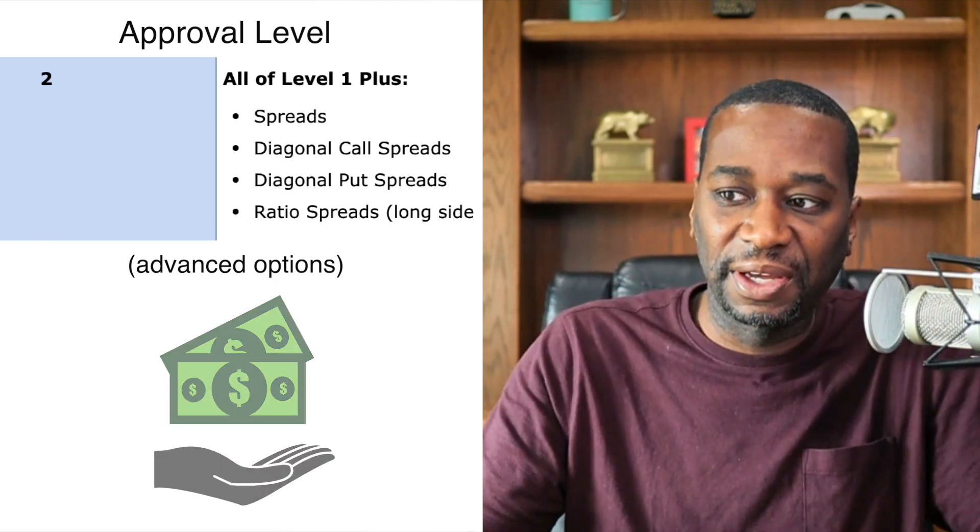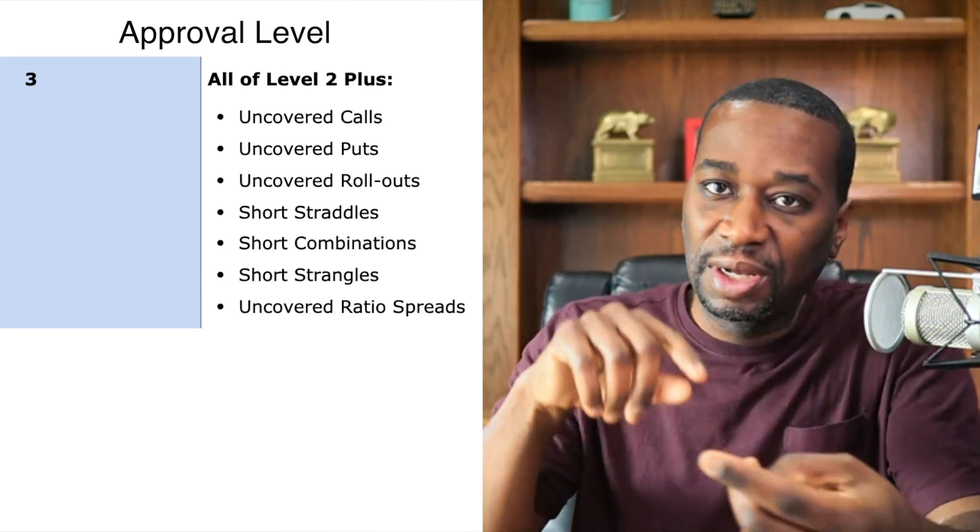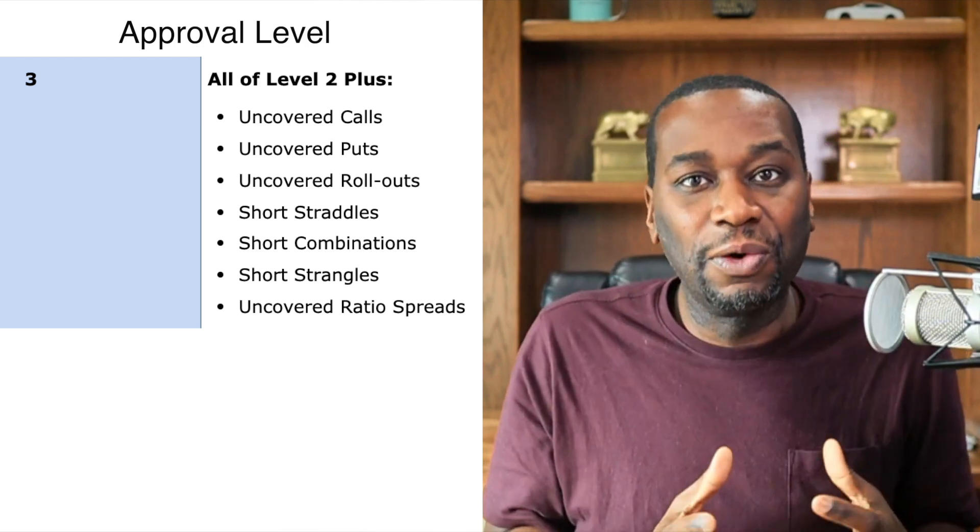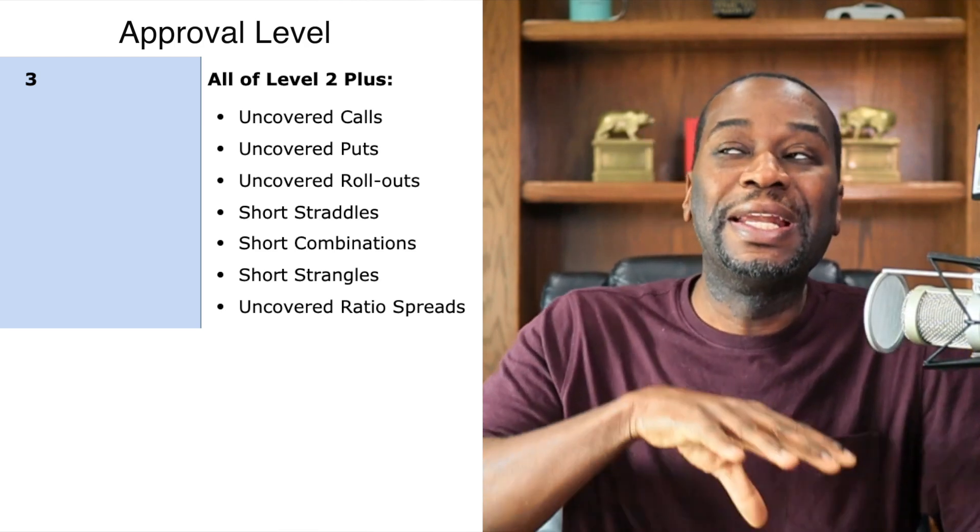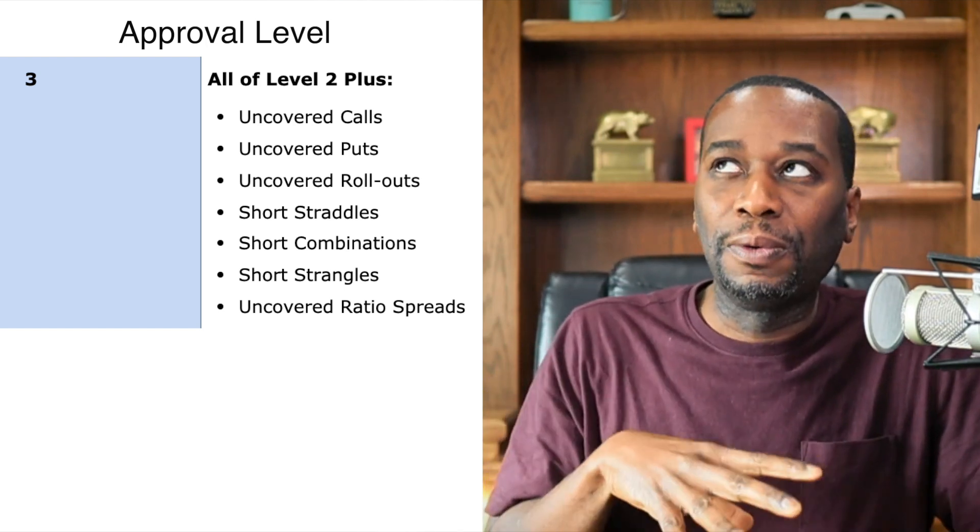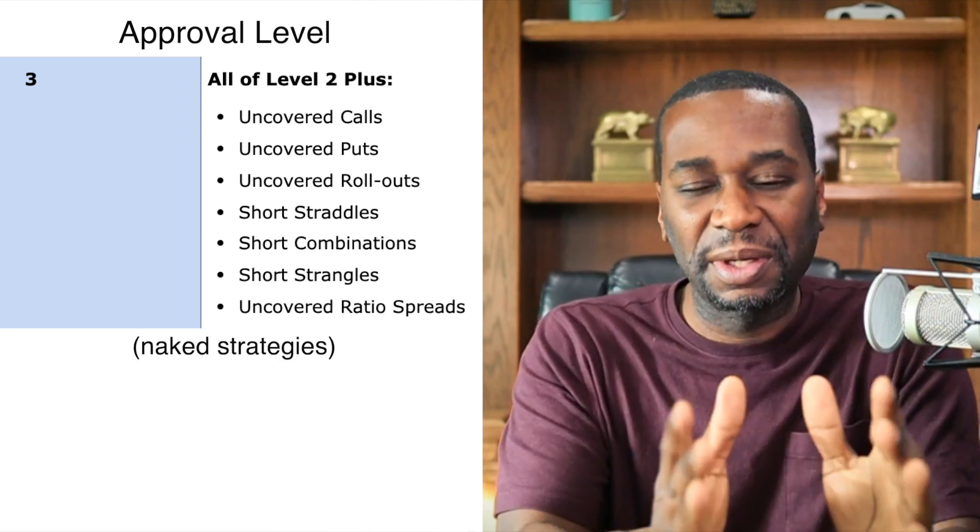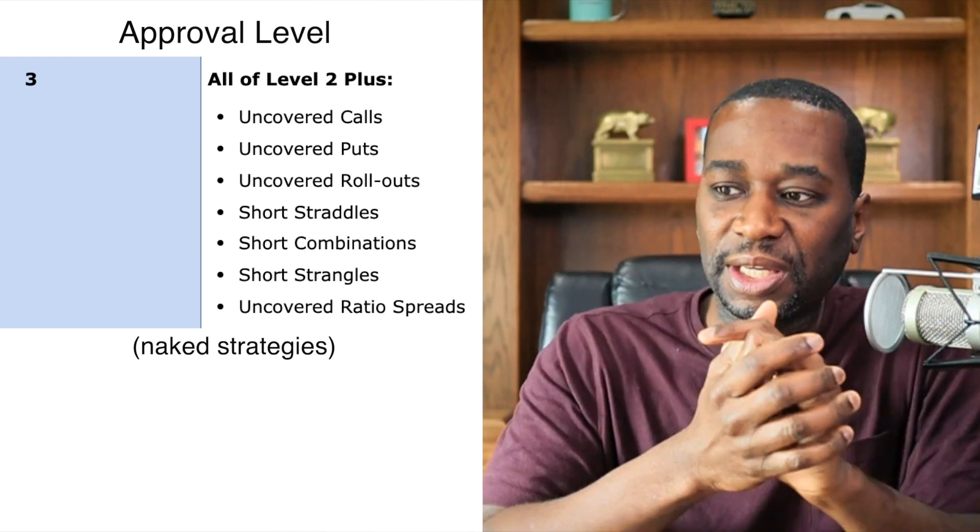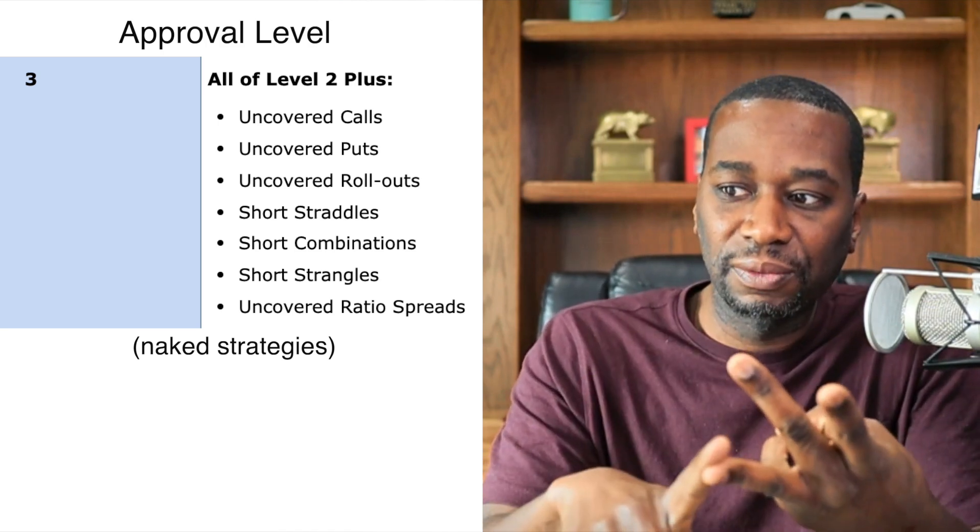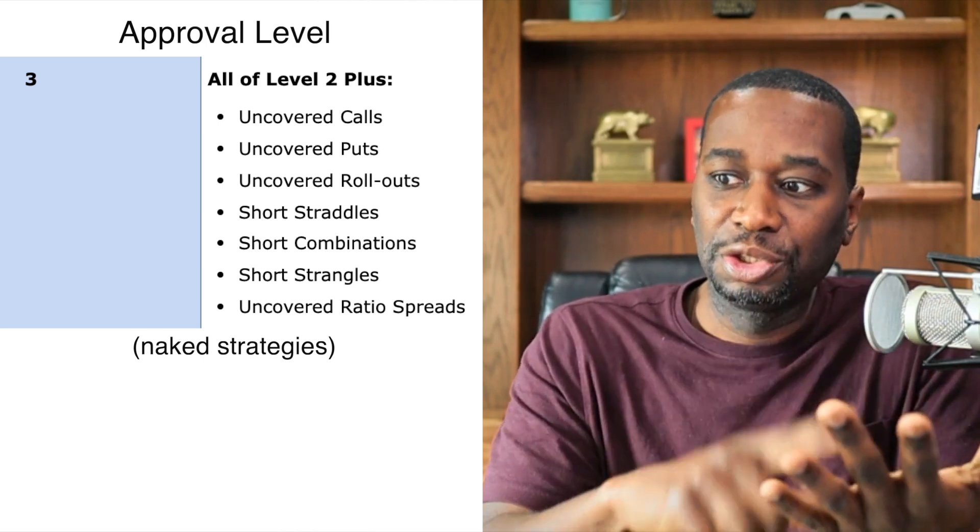So you're not having to come up with more money or do anything advanced, which leads me to level three, which is going to include everything from level zero, level one, level two. Level three is the level where you are able to do not only the advanced strategies, but you're able to do it naked, or should I say on credit or on your reputation. I'm going to explain what I mean for that in a minute.